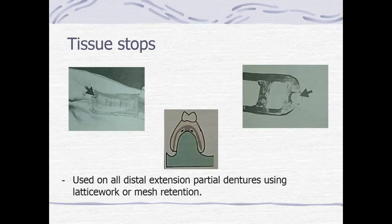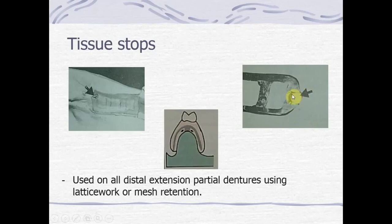A cast stop is created by removing a small square area of relief wax (2 x 2 mm) where the posterior strut of the minor connector crosses the center of the ridge. This depression is incorporated into the refractory cast, and during the waxing process, the depression is filled with wax before casting. The cast stop provides support and prevents bending of the framework. It is only used in distal extension cases.